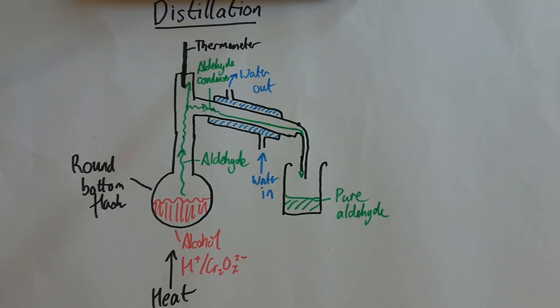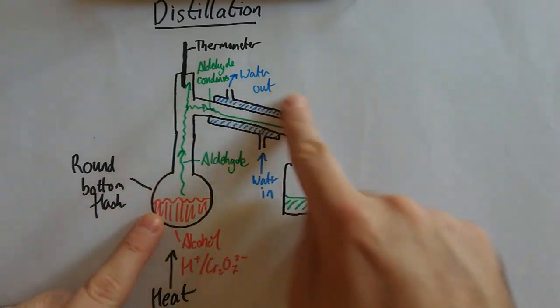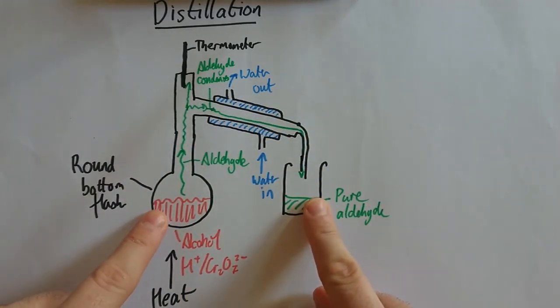Now in here that alcohol with the acidified dichromate is still being heated up, so that can continue reacting to form the carboxylic acid if you've got enough of the oxidizing agent. But none of it will come in here because you're also below the boiling point of the carboxylic acid. That's why this is distillation, and this is why you use distillation to collect aldehyde.